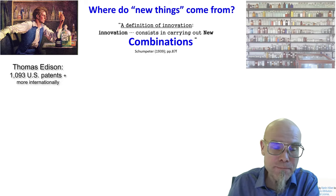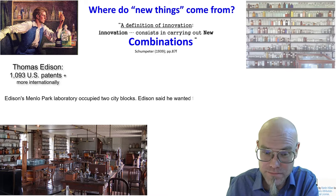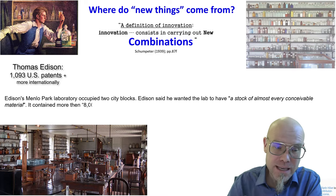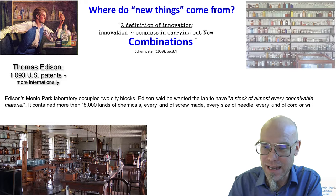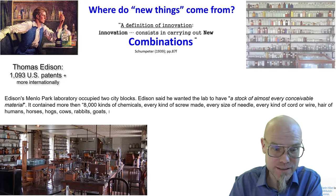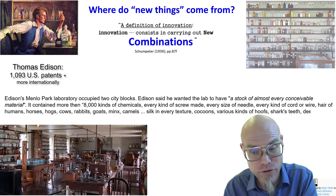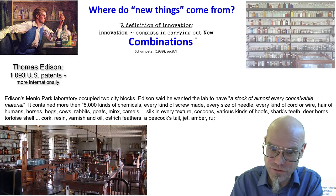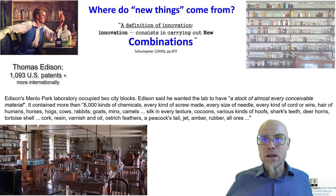Where did he work? He had a big laboratory. Edison's Menlo Park Laboratory occupied two city blocks. Edison said he wanted the lab to have a stock of almost every conceivable material. It contained more than 8,000 kinds of chemicals, every kind of screw made, every size of needle, every kind of cord or wire, hair of human, horses, hogs, cows, rabbits, goats, minks, camels, silk and heavy textures, cocoons, various kinds of hooves, shark's teeth, deer horns, tortoise shells, cork, resin, varnish, and oil, ostrich feathers, a peacock tail, jet, amber, rubber, and all sorts. So he had a lot of things he could work with, and then he combined them tirelessly.